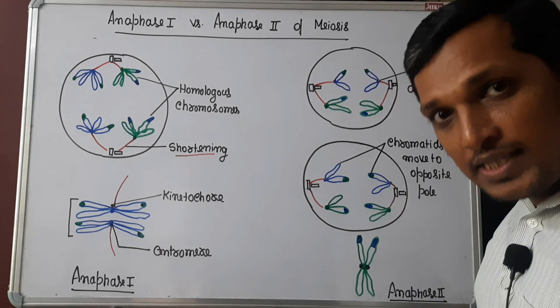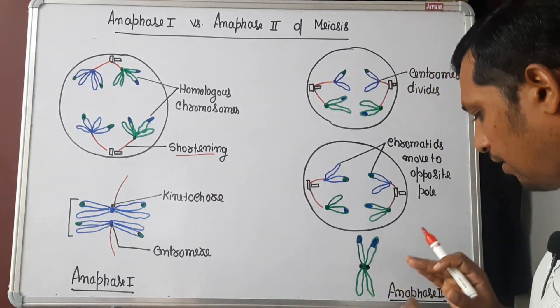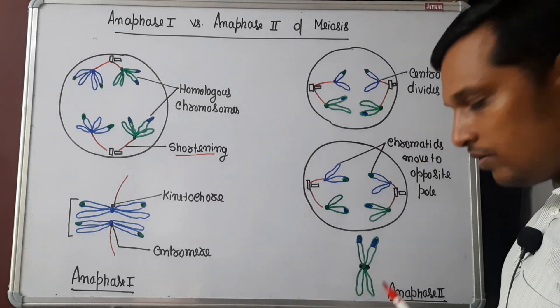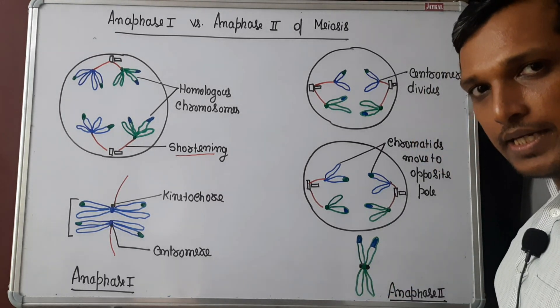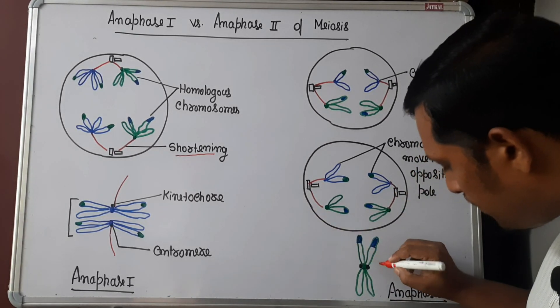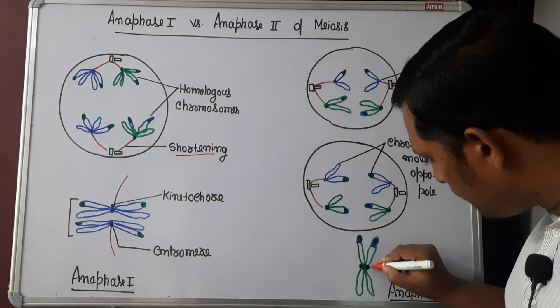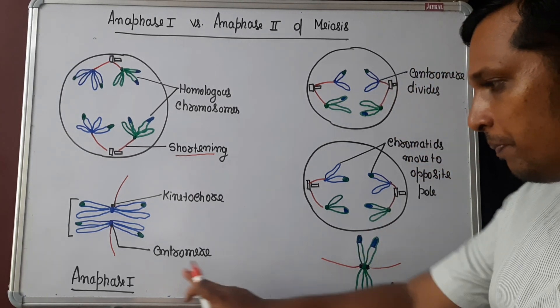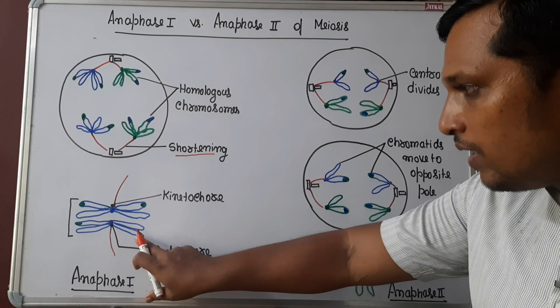Meiosis 2 in its metaphase stage, which comes before anaphase - metaphase 2 - chromosomes will be at the equatorial plate. To each chromosome now from the centriole, two spindle fibers attach.